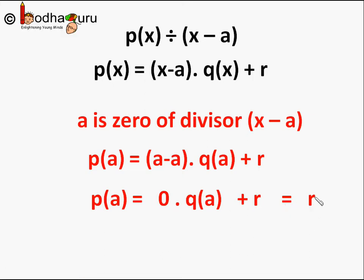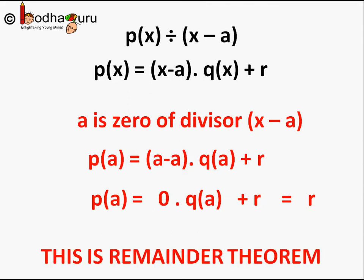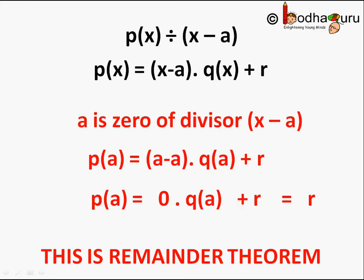This is the Remainder Theorem. It states: let p(x) be any polynomial of degree greater than or equal to 1, and let a be any real number. If p(x) is divided by a linear polynomial x - a, then the remainder is equal to p(a) — that is, the result of replacing x by a inside the polynomial equals the remainder r.